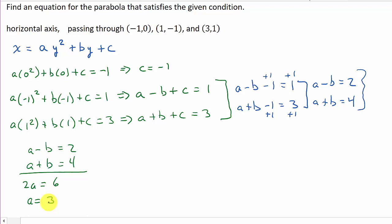And now that I know a is 3, I can plug this back into either one and get b. And so I'll plug it into this second one. So 3 plus b equals 4, so that gives me b equals 1.